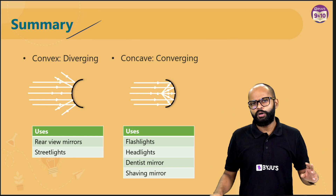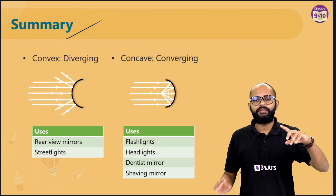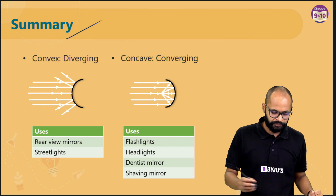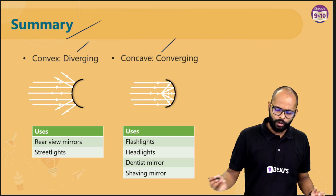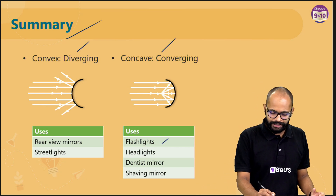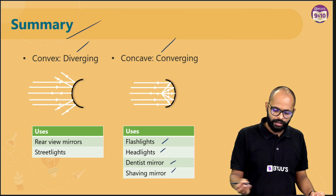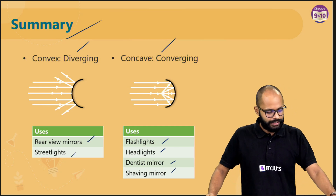Let's summarize everything. Convex is a diverging mirror and concave is a converging mirror. Concave mirrors are used in flashlights, headlights, dentist mirrors, and shaving mirrors. Convex mirrors are used in rear view mirrors and street lights.